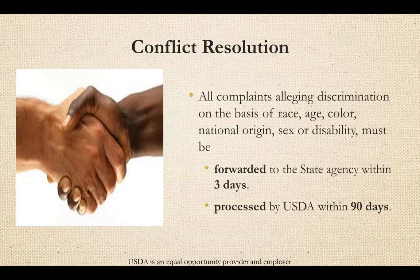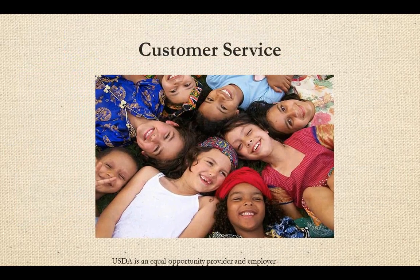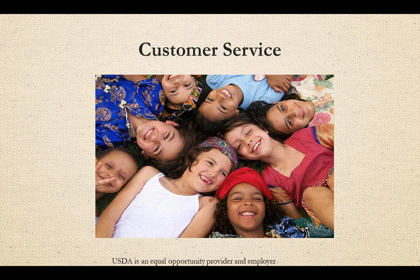The process of conflict resolution includes making sure all complaints alleging discrimination on the basis of race, age, color, national origin, sex, or disability must be forwarded to the state agency within three days and must be processed by USDA within 90 days. Customer service involves treating all program participants and their families fairly and equally. Frontline servers should be enabled to provide the best customer service possible to families and recipients of child nutrition programs. Accountability and awareness of discrimination is a key component to good customer service.